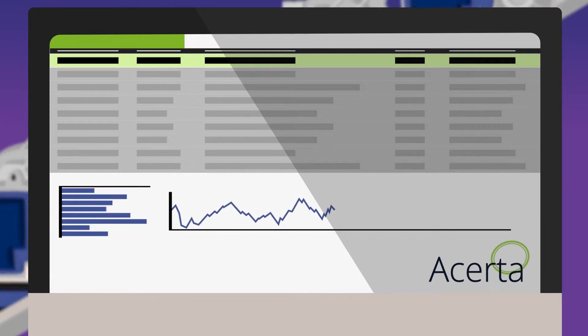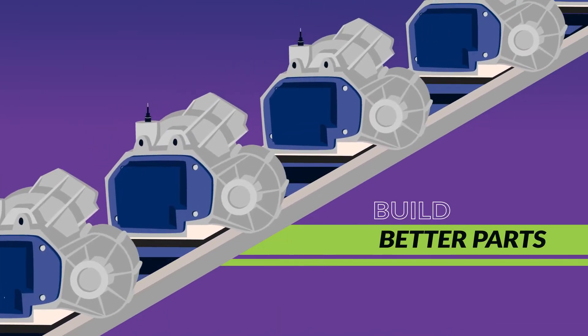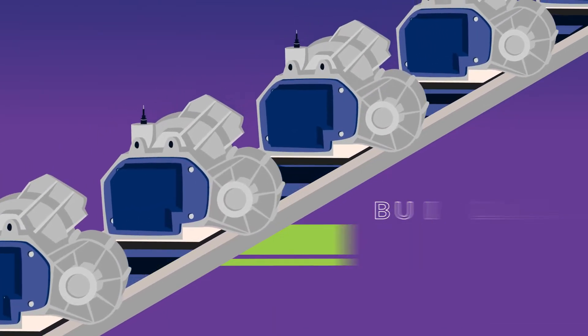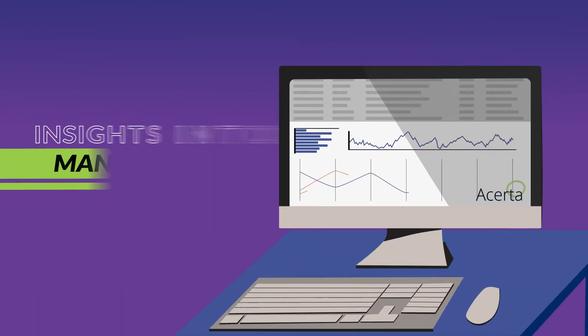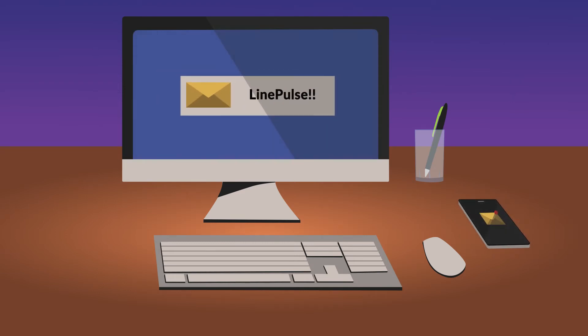His team always knows what's happening on their line, which means they build better parts more efficiently. Intuitive dashboards show them production issues and root causes of failures. Alerts appear right in their inbox or Microsoft Teams.